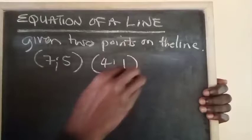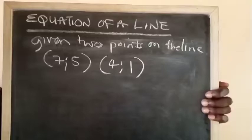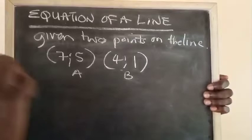We then find the equation of a line which passes through point A and B. Point A is 7, 5. Point B is 4, 1.